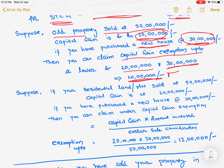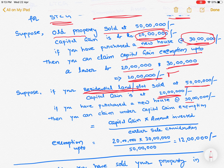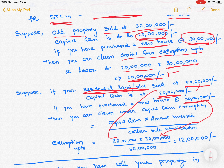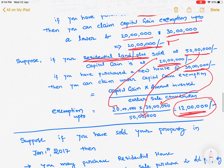Now we will see another illustration. So far we discussed the sale of a residential house or flat. Suppose instead it is a residential land or residential plot sold at 50 lakhs, with a capital gain of 20 lakhs. If you purchased a new house at 30 lakhs, then the exemption is calculated as: capital gain × amount invested ÷ sale consideration = 20 lakhs × 30 lakhs ÷ 50 lakhs = 12 lakhs. So you can claim only 12 lakhs, and on the remaining 8 lakhs, you need to pay capital gains tax.